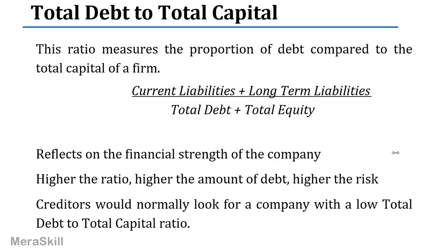Potential investors would look for a company with a low total debt to total capital ratio. If a company wants to borrow money from me, I would not lend money to a highly leveraged company. But if this ratio was low, I do not mind — the company is not so much leveraged, they may be able to handle the debt, and they will be able to pay me my interest.